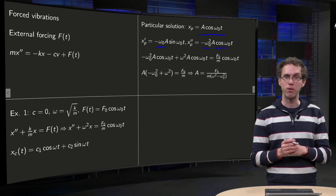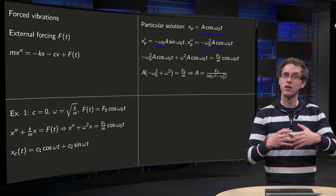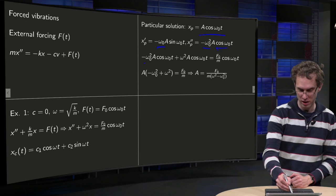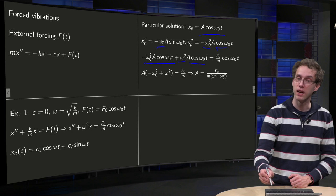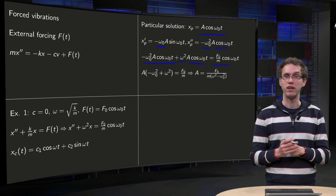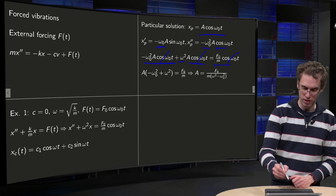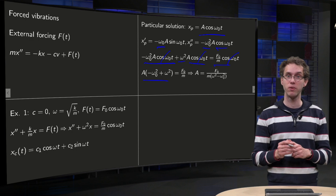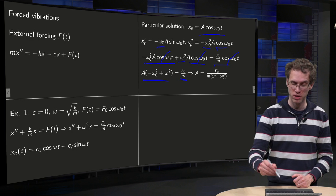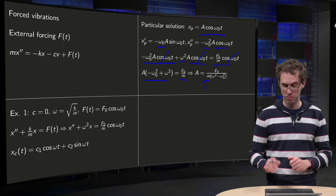We plug in back our particular solution in the differential equation, and we try to see whether we find a solution for A, whether we can satisfy our differential equation for all t if we choose A properly. So here we have our xp double dot plus omega squared times xp equals external forcing. And then you see the t's drop out, so we can satisfy this equation for all t's because the cosine omega_0 t all drop out. And we see that we have A times minus omega_0 squared plus omega squared, where both omega_0 and omega are constants, equals F0 over m. And F0 and m are also constants, so here we have our constant A: A equals F0 over m times omega squared minus omega_0 squared.